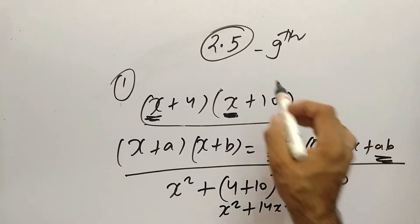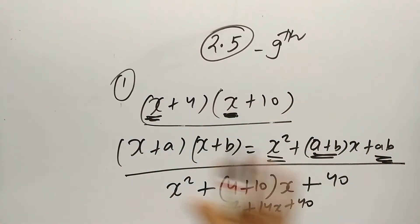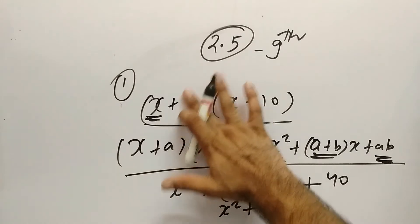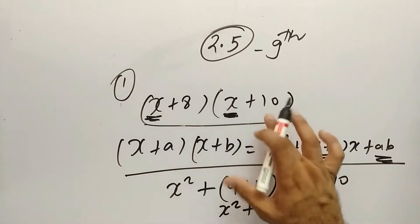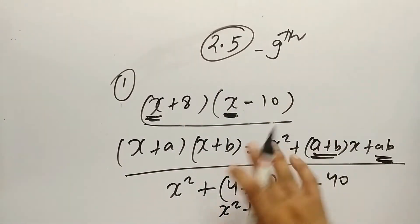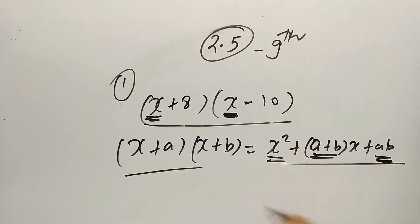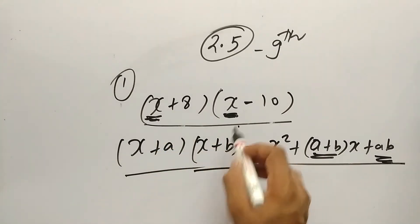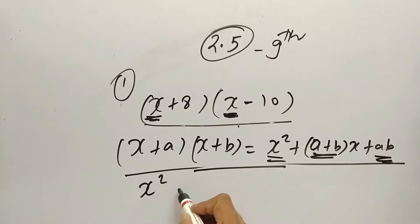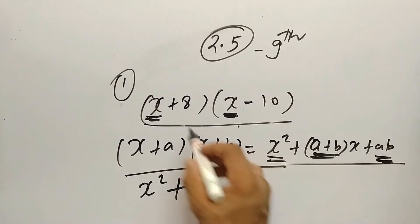So the first part of the first question should be clear to you. Now let's solve the second part of the first question. The second question is (x+8)(x-10). We have to solve this. This will be very simple: x times x is x², plus (a+b)x.